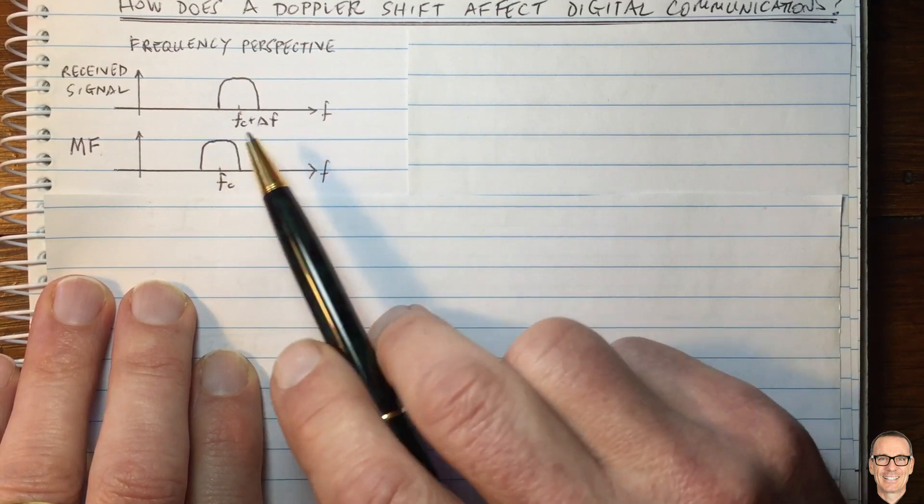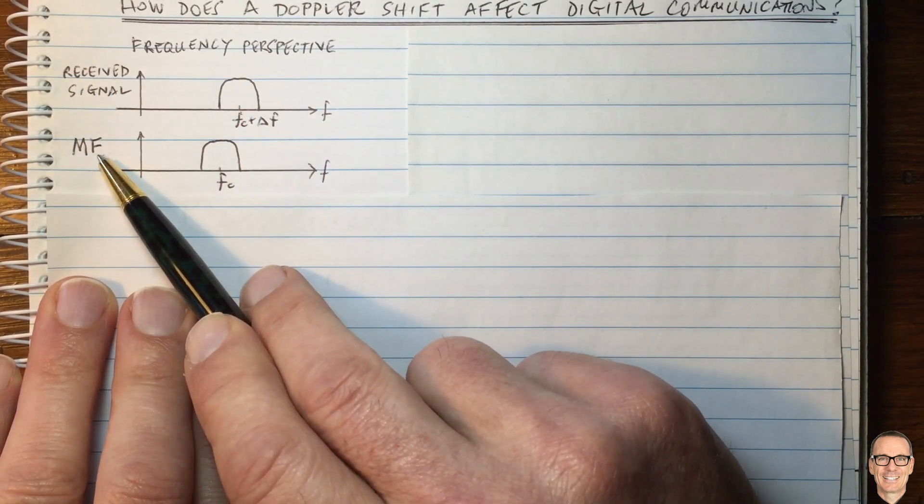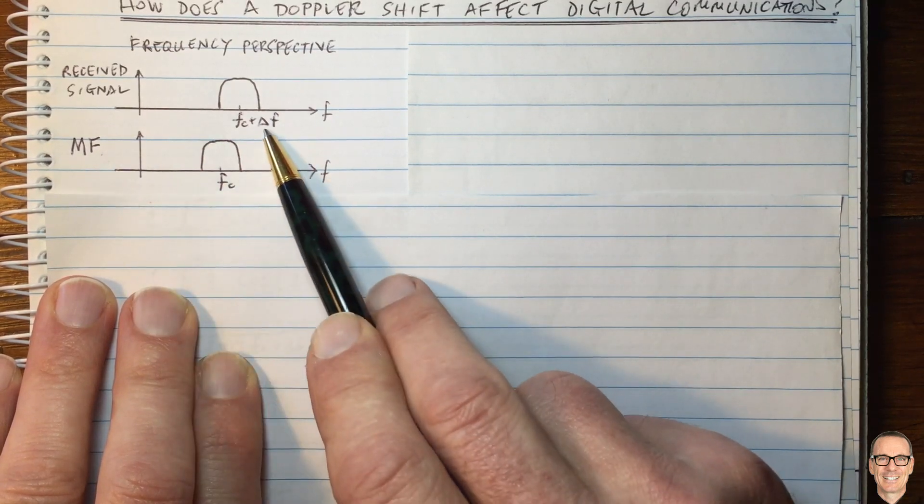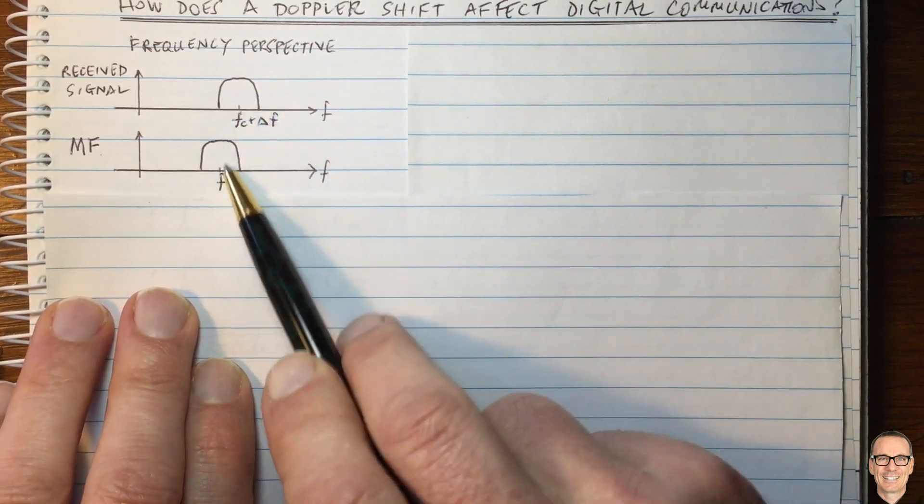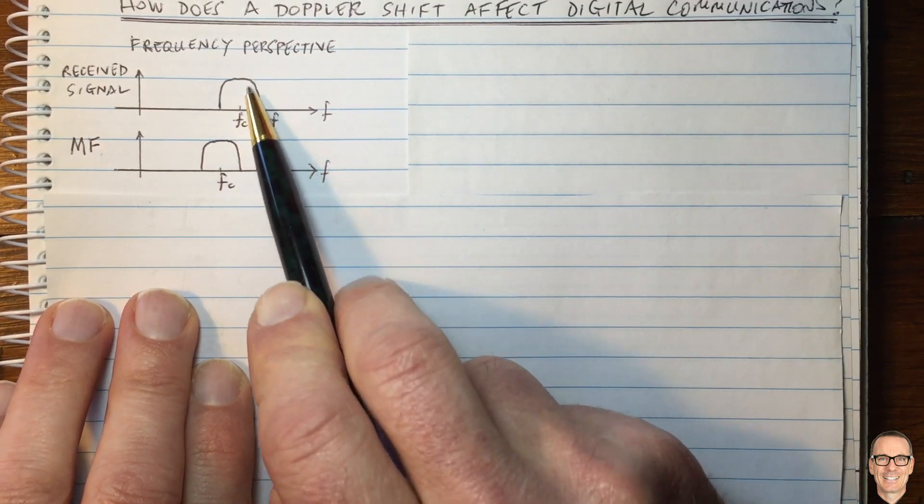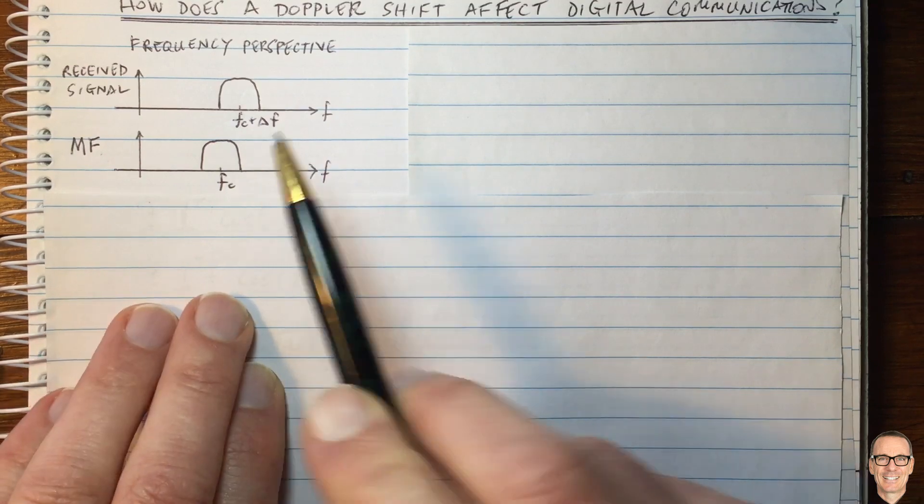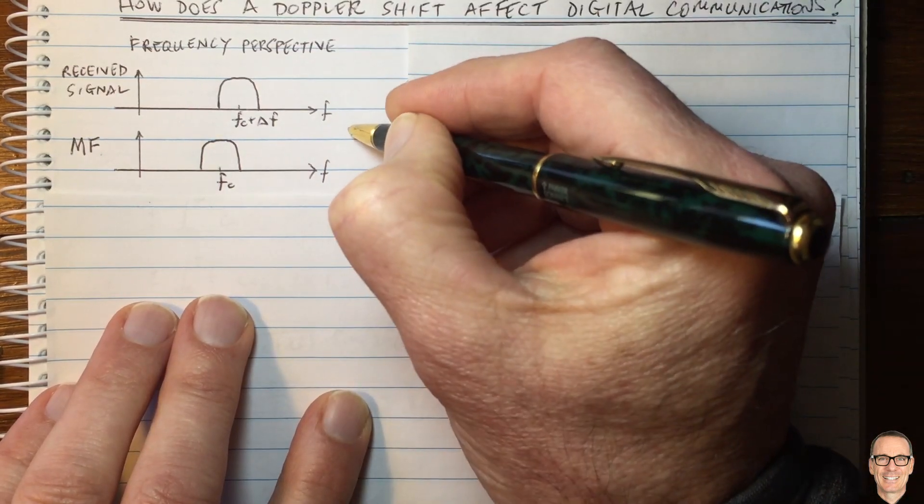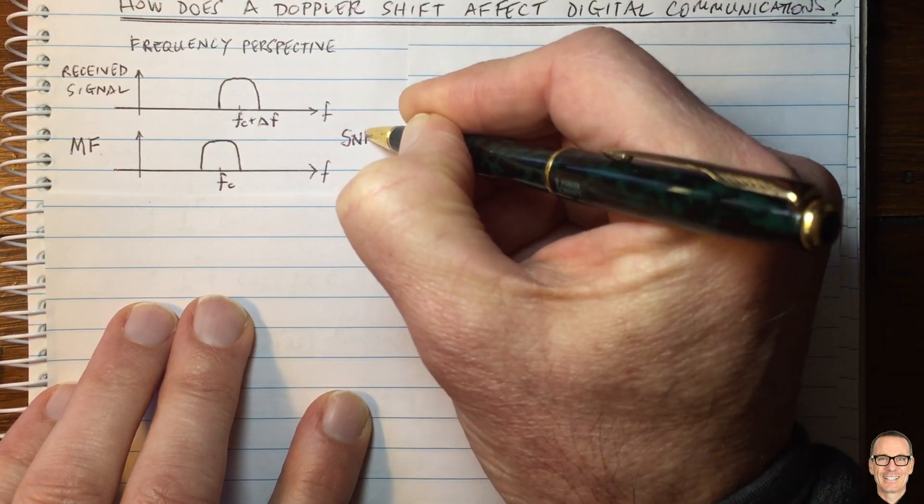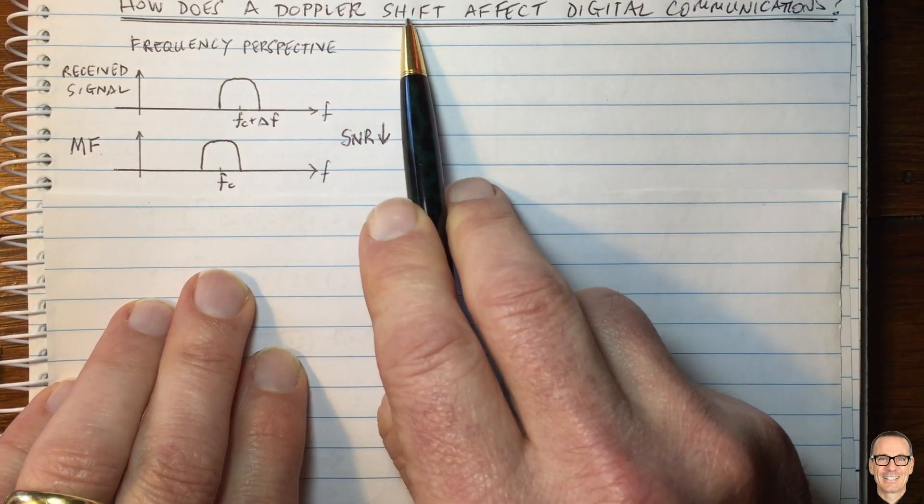And straightaway we can see that if our received signal is put through the matched filter, where the matched filter doesn't know about the Doppler shift, then when you multiply these two together in the frequency domain, all of this component of the received signal will be being multiplied by zero.